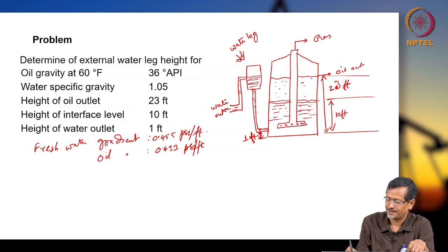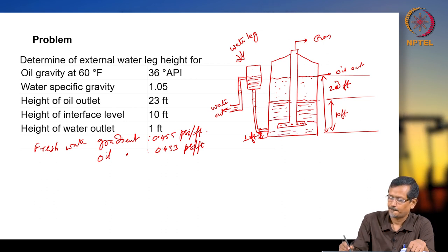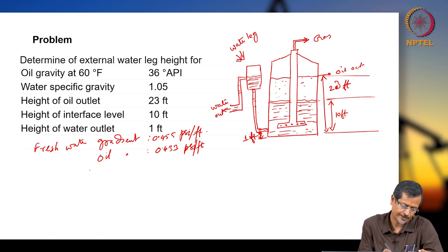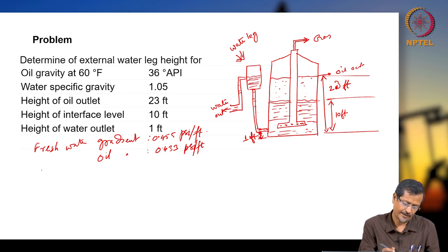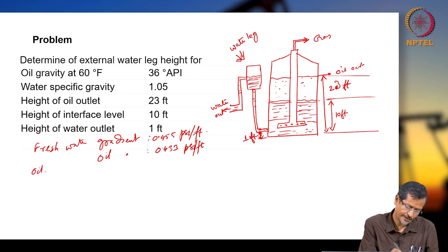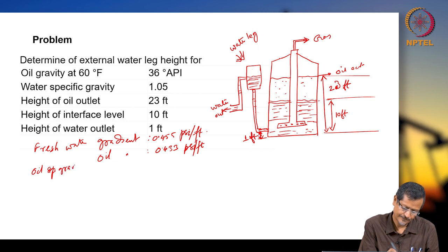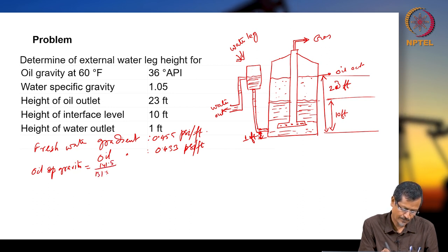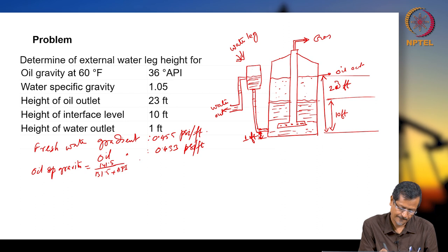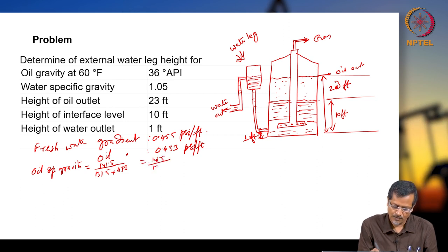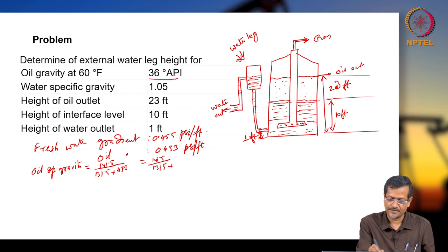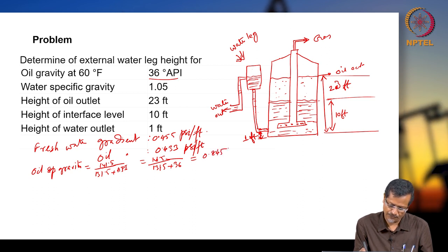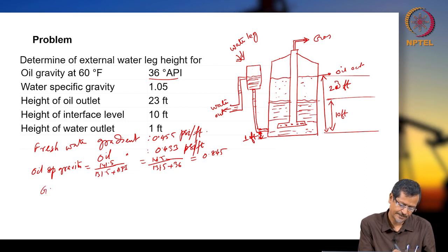There is a spreader spreading fluid here. To solve, first calculate the oil specific gravity. Oil SG = 141.5 / (131.5 + API). API is given as 36, so oil SG = 0.845. Now, oil gradient and water gradient are both given.